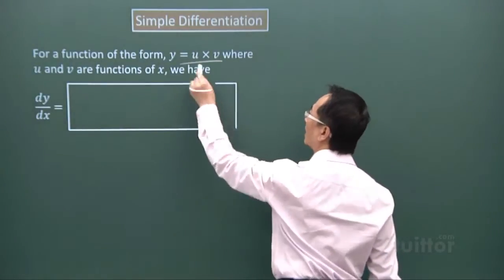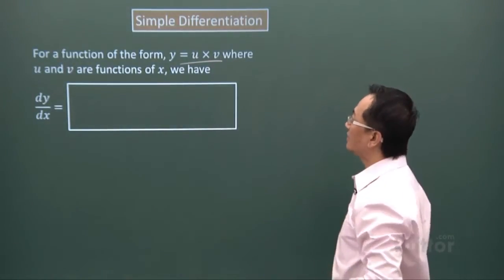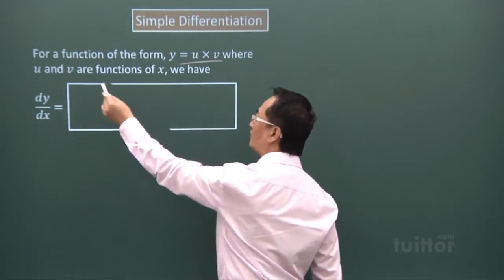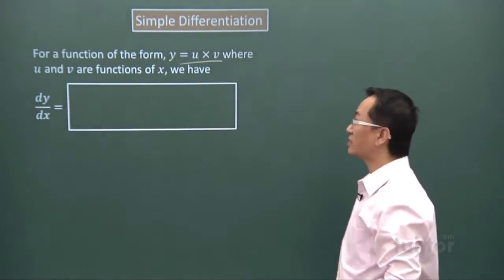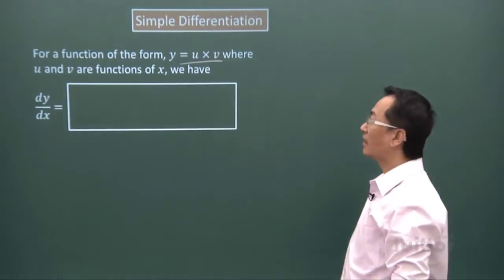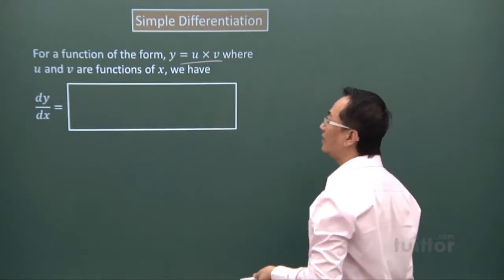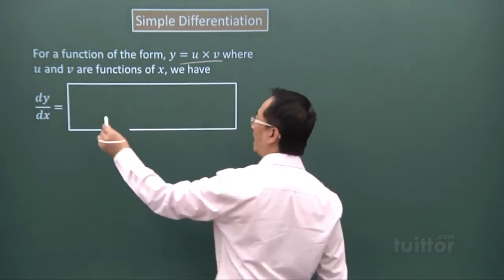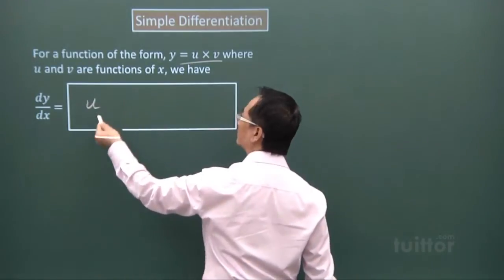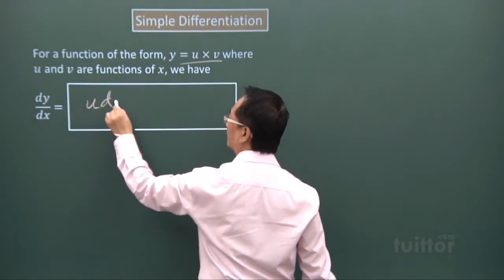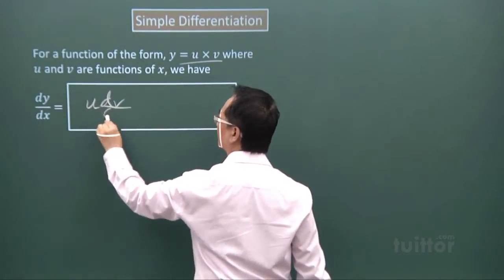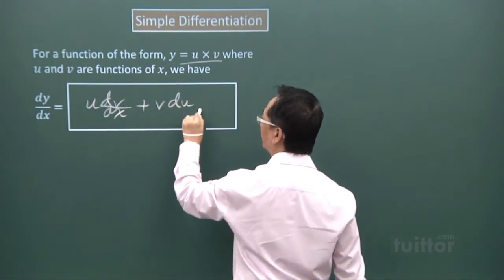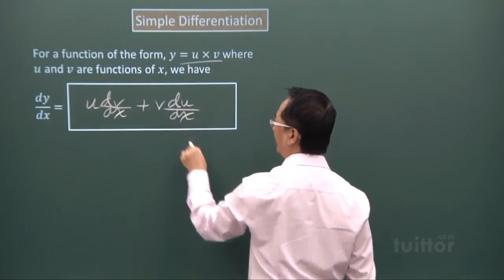is a product u times v. Consider closely that u and v are actually functions of x. Then your dy over dx can be written as u dv over dx plus v du over dx.